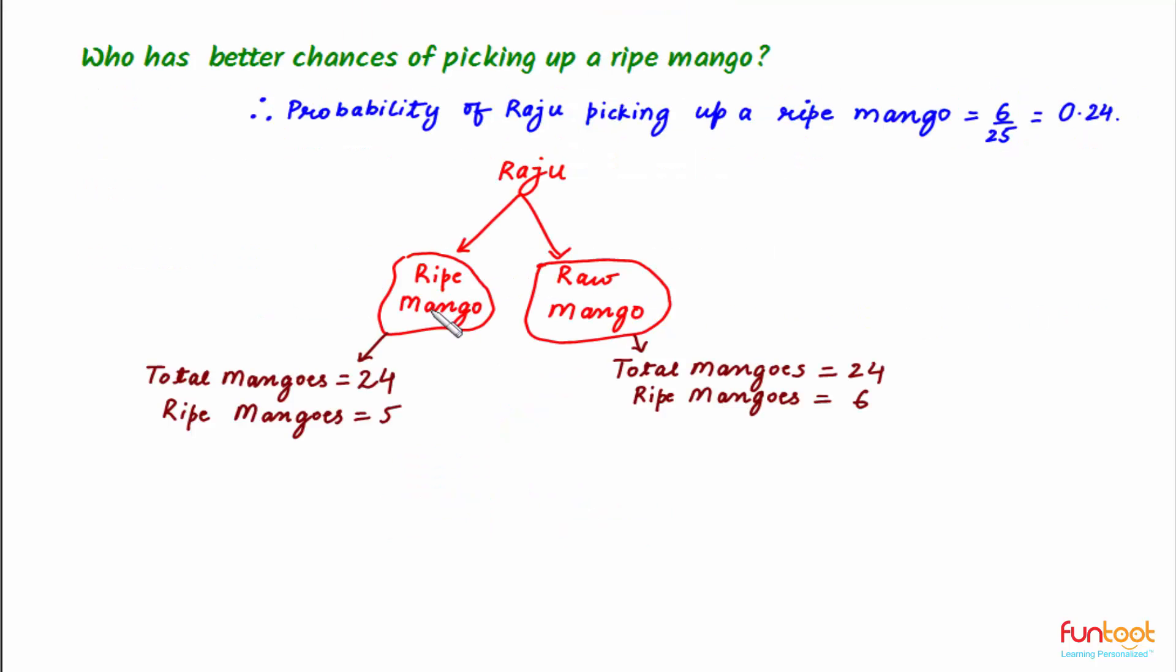If Raju picks up a ripe mango, then total number of mangoes will become 24 because the mango is not being replaced here. The number of ripe mangoes will become 5 because one ripe mango has been picked up.